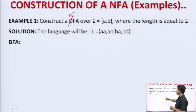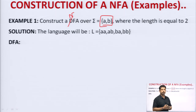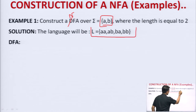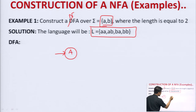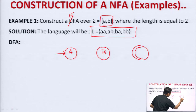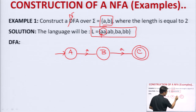Example 1: Construct an NFA over alphabet {A, B} where the length equals 2. The language is L = {AA, AB, BA, BB}. We need to design a finite automaton such that all these strings get accepted. I will take an initial state A, one more state B, and one more state C. For string AA: the first element is A and the second element is A, so on two A transitions we reach the final state C and it is accepted.